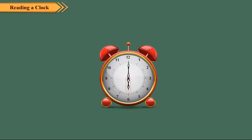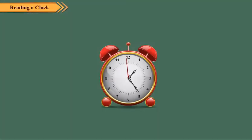The shortest hand is called the hour hand. It moves the slowest. It takes one hour to go from one number to another. All the hands move as shown here — it is called clockwise movement.